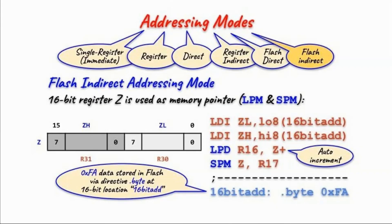Before we go into the details on how pointer Z is used to access data in flash memory, we need to discuss addressing modes in AVR assembly. Addressing modes refer to the transfer of data from source to destination. The source could be an immediate number, a CPU register, a memory location, or an IO port, while the destination must be a CPU register, memory location, or IO port.